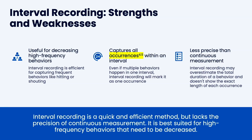The strengths and weaknesses: it's used for decreasing high frequency behavior. Interval recording is efficient for capturing high frequency behaviors like hitting or shouting. It captures all occurrences within an interval — even if there are multiple behaviors in one interval, interval recording marks it as one occurrence. That's how the overestimation occurs and it's less precise. If you took frequency, you would capture that it only happened once; you lose that granular data with this method.